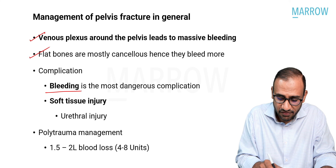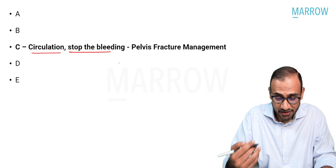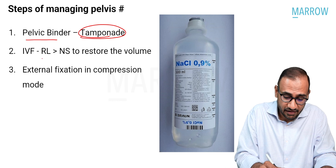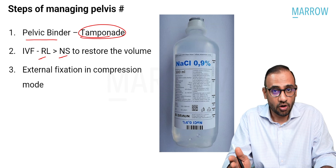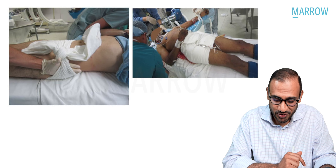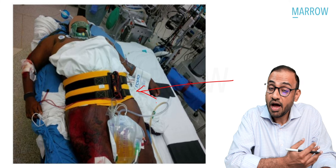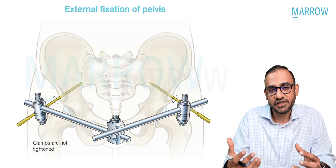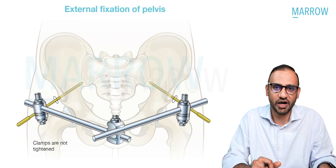Bleeding is a very important cause of death in these patients. Apply the pelvic binder — using a bed sheet, dupatta, or shawl — for tamponade effect. Then resuscitate with fluids like Ringer's lactate or normal saline, or blood if available. Once resuscitated, shift to the operation theater and apply the external fixator in compression mode — not to stabilize bone, but to bring compression to the pelvis. Finding blood for transfusion or applying the external fixator takes time, so the first immediate step is wrapping something around the pelvis.